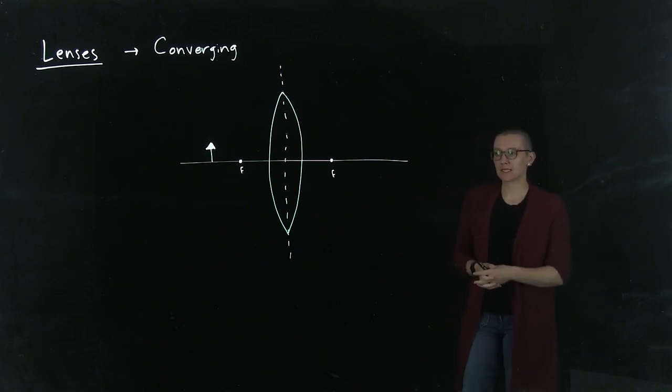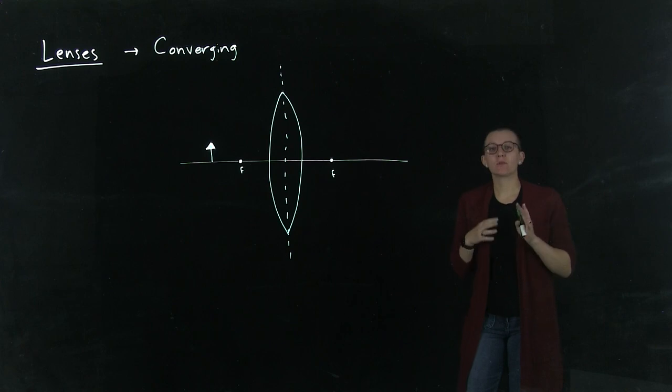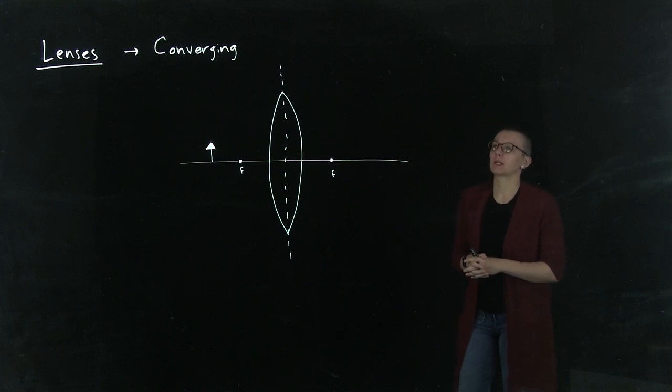We're going to talk about converging lenses and specifically what are some useful rays that you can draw that will help you figure out where your image is. This is true for any converging lenses.